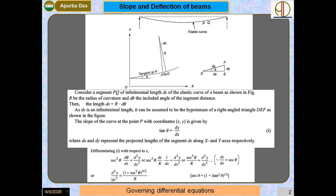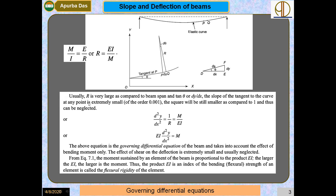We can write d²y/dx² = (1 + tan²θ)^(3/2) / r. Since the deflection is very small, the numerator term (1 + tan²θ)^(3/2) is approximately 1 and can be neglected. So we can write d²y/dx² = 1/r.